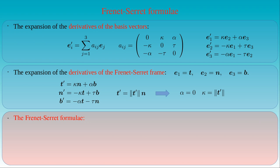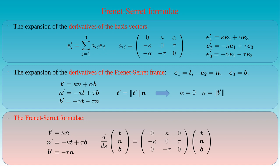The Frenet-Serret formulae are: the derivative of T with respect to arc length equals kappa times N; the derivative of N equals minus kappa times T plus tau times B; and the derivative of B equals minus tau times N. In matrix form, the left-hand side is the derivative of the column vector of T, N, B, and the right-hand side is the antisymmetric matrix containing the two non-vanishing elements kappa and tau, multiplied by the column vector of frame vectors. Here, kappa is defined as the length of the derivative of T and is identified as the curvature of the curve at parameter s. The function tau equals minus the dot product of N and the derivative of B, and is called the torsion of the curve at parameter s.